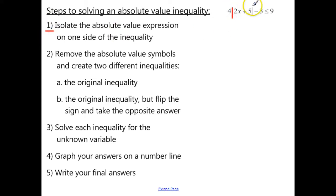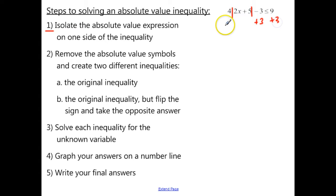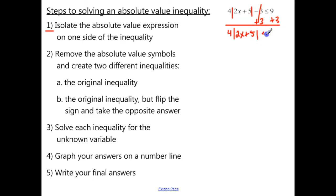Here are our absolute values, and we want to isolate that first. Let's add 3 to both sides. That cancels, and now we're left with 4 times the absolute value of 2x plus 5, less than or equal to 12.